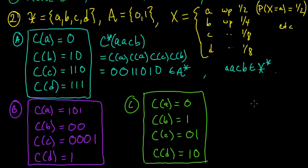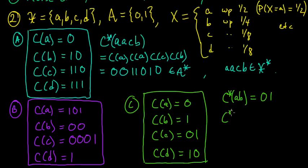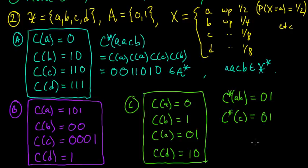However, something ought to disturb you about Code C. For example, c*(ab) = 01, but c*(c) is also just c(c) = 01. So if we saw the sequence 01, we would not be able to figure out what the original message was. We say this code is not uniquely decodable, and that is a bad thing. Next we're going to start talking about uniquely decodable codes and their properties.